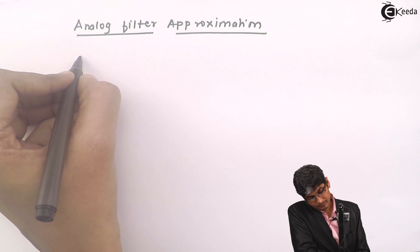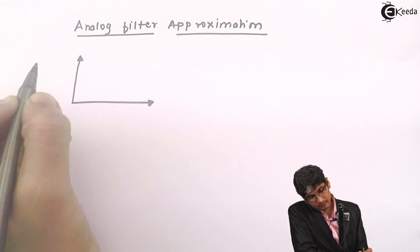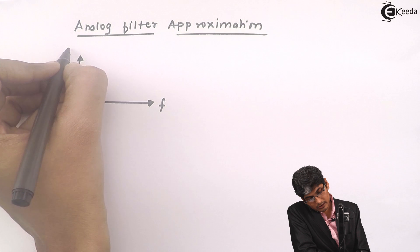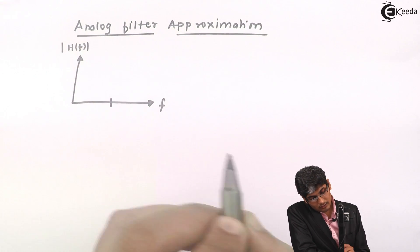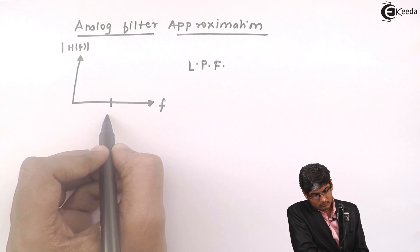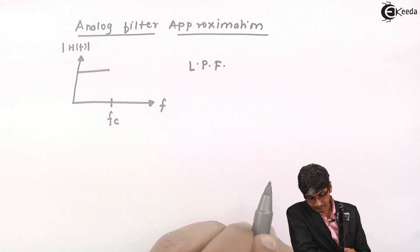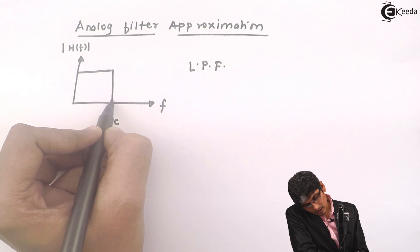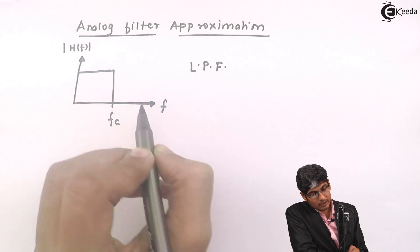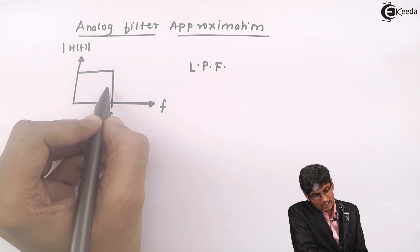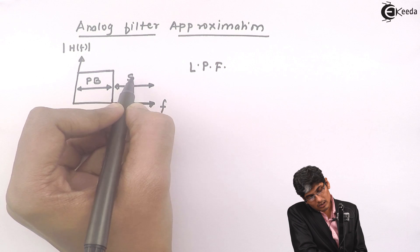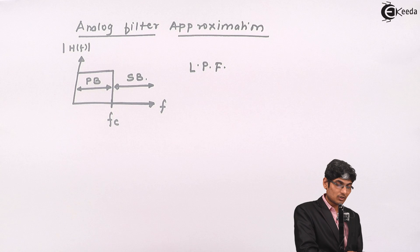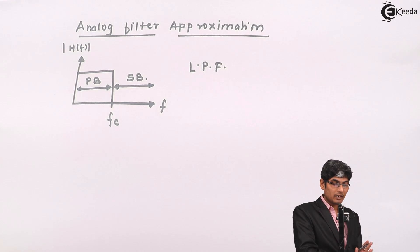For any filter, I have frequency on the x-axis and I plot the transfer function with respect to frequency. For a low pass filter (LPF), till the cutoff frequency my filter should pass all the frequencies, and at the cutoff it should go to zero and remain zero thereafter. The passband contains frequencies which are passed by the filter, and the stopband contains frequencies which are blocked by the filter.